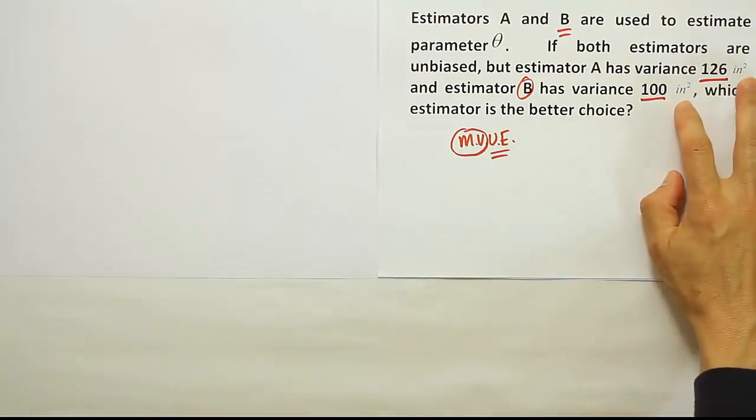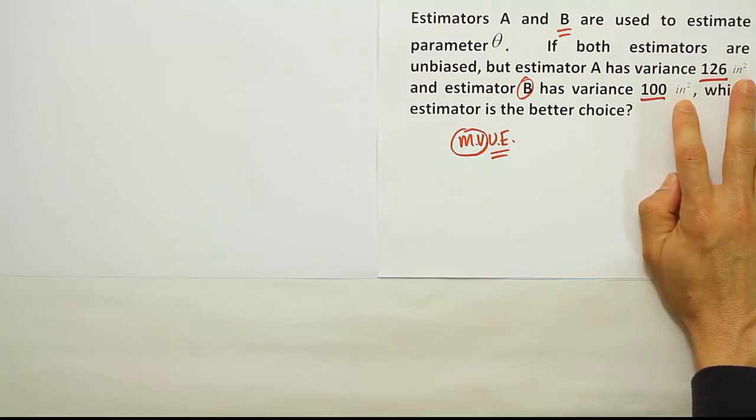Notice that the estimators, they're both measuring in inches, so inches squared for the variance unit. But either way, the smaller one is the preferred one.